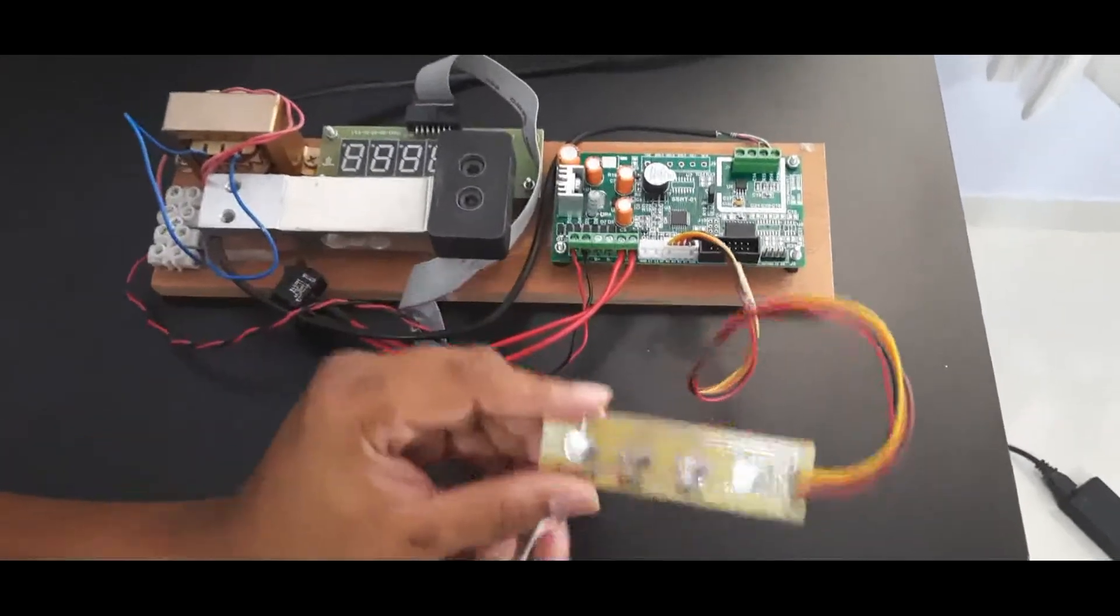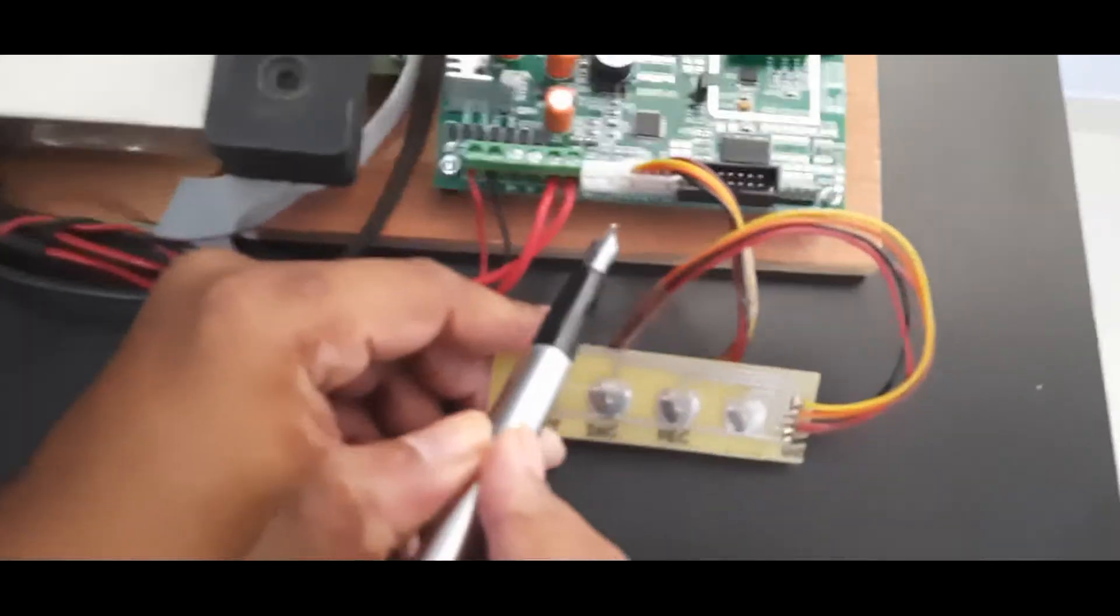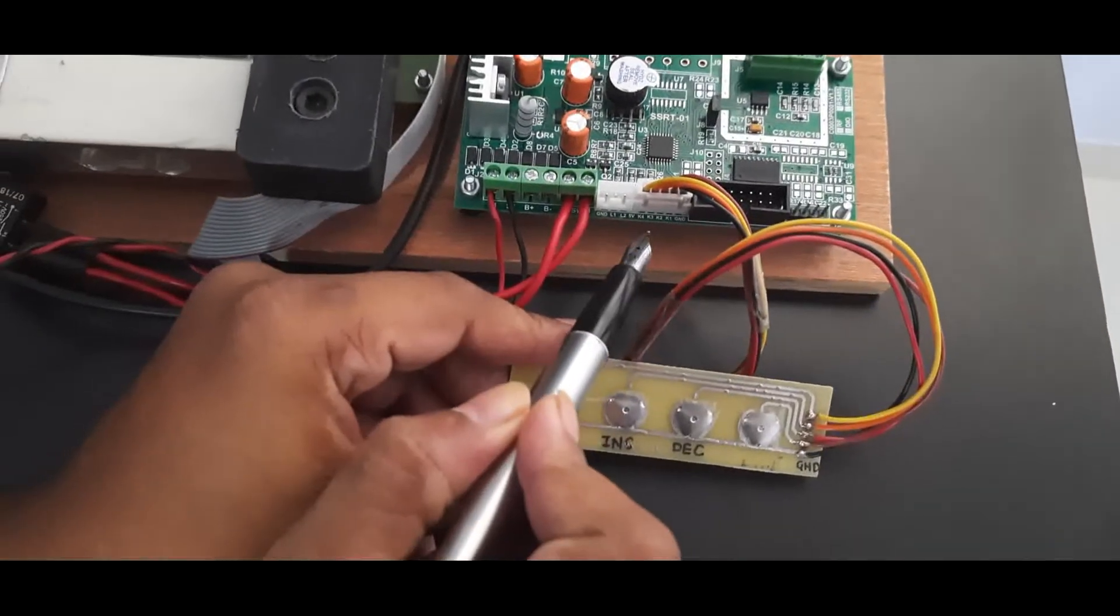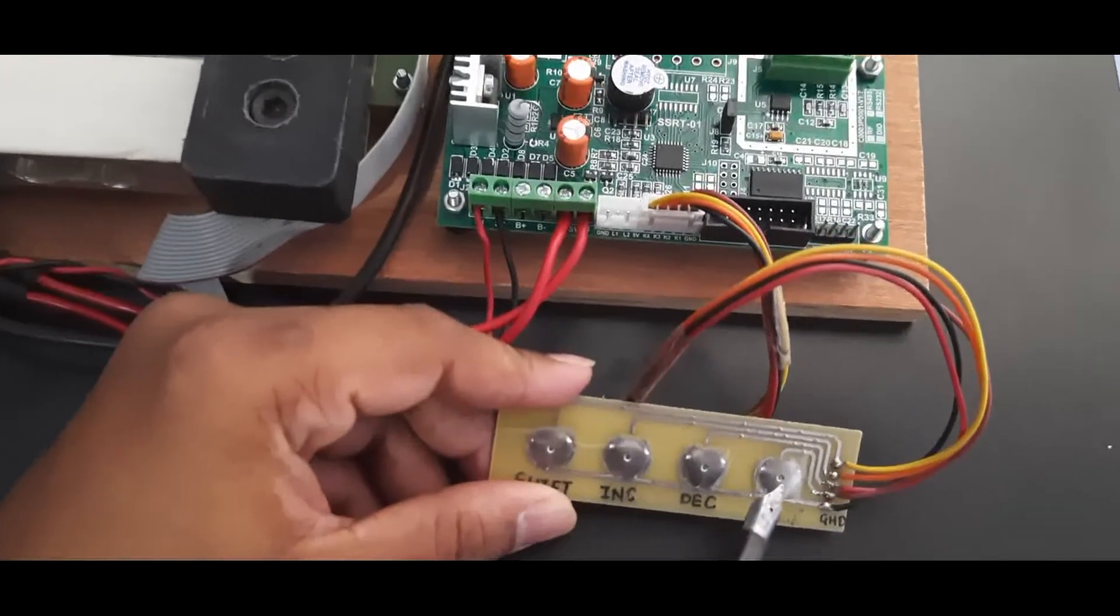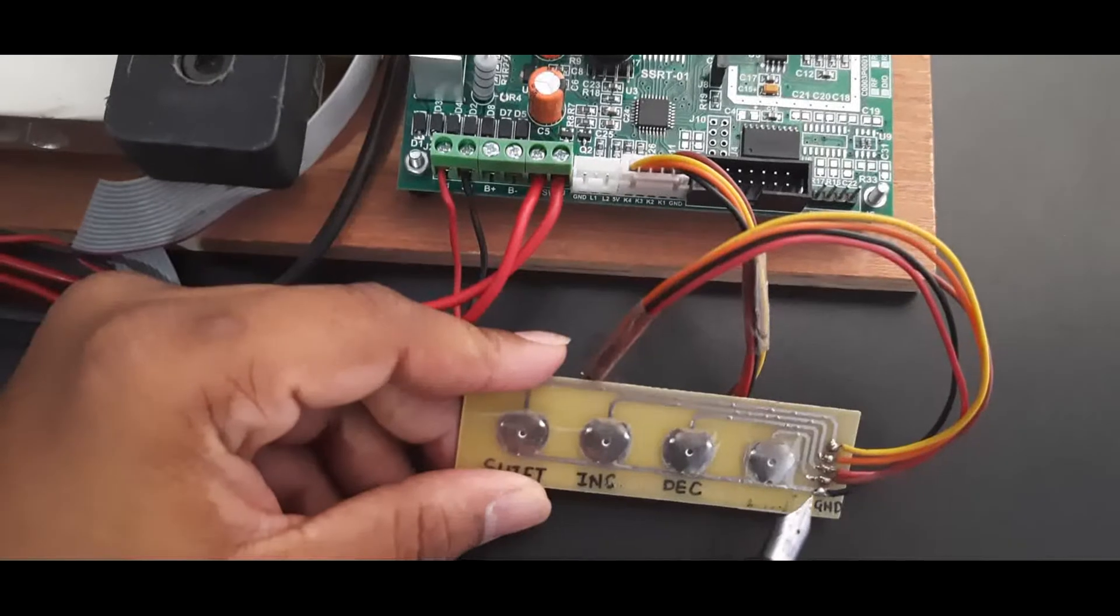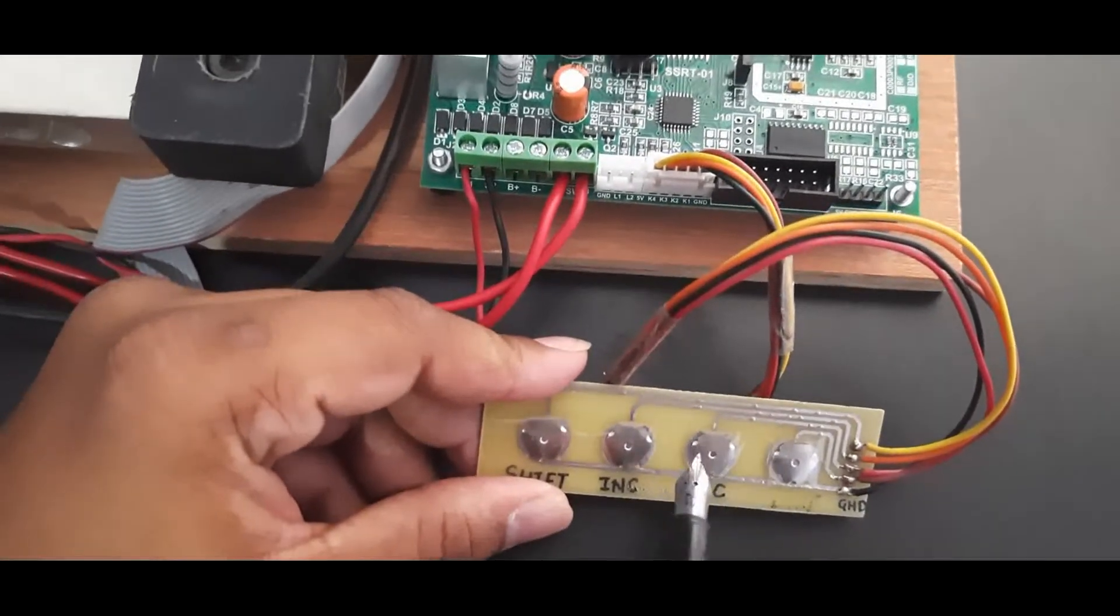Shift key connects to K4, increment to K3, decrement to K2, enter key to K1, and ground is for common connection. This connection is most important, otherwise you will get confused while entering the password or any parameters.